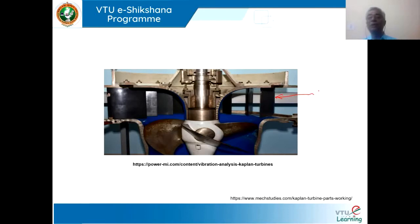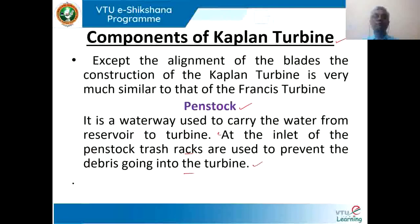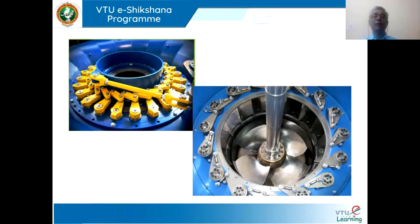Here in the picture, these are called the wicket gates, also called guide blades. These are called the runner blades. This is a direct picture. Try to understand the components properly. This is the shaft. The water from the spiral casing will move in this direction. The guide vanes can be rotated in either direction so that the flow can be controlled.